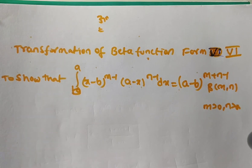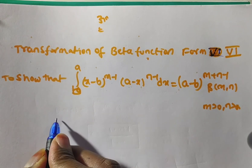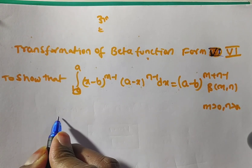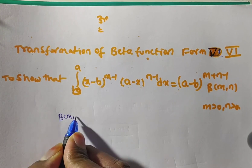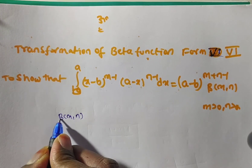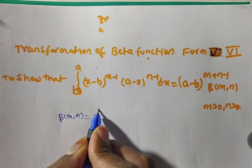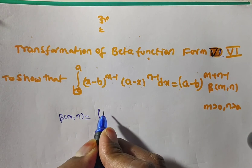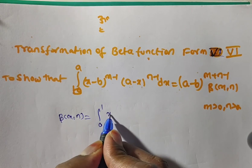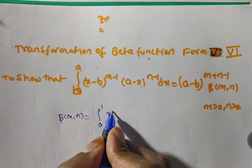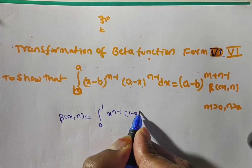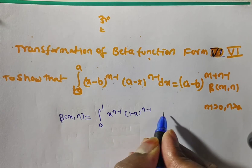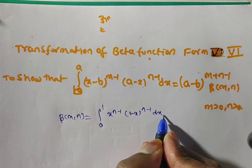Where m greater than 0 and n greater than 0. To prove this, first we consider the definition of beta of m comma n. We have integral from 0 to 1 of x to the power m minus 1 into (1 minus x) to the power n minus 1 dx.